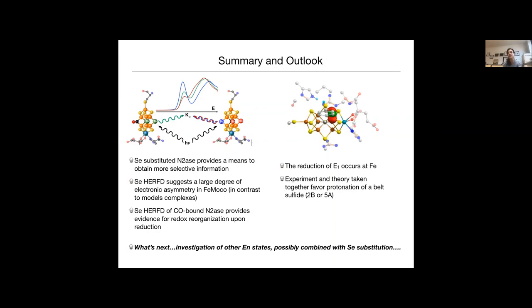So on the right panel is the summary for this part. What we saw from looking at the E1 studies is that reduction of E1 occurs in iron. It actually does occur on the side of the cubane closer to molybdenum. So this may explain really subtle perturbations of molybdenum. And what we see experiment and theory taken together favor protonation of a belt sulfide, either the 2B or the 5A position. I've also in the first part showed you how selenium substitution gives us a means to get more selective information. It surprisingly shows there's a large degree of electronic asymmetry in FeMoCo in contrast to what we know about iron-sulfur model complexes. And the selenium HERFT also showed that CO-bound nitrogenases provide evidence for redox reorganization upon reduction. And so what we're doing next is to look at other EN states, possibly combined with selenium substitution, although those are really tough experiments.